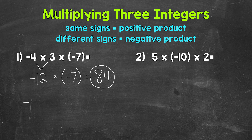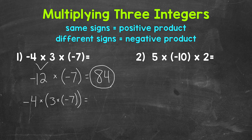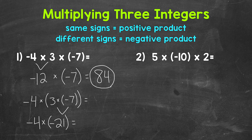Let's see exactly what that means here. I will rewrite our problem: negative four times, and then I'm going to put three times negative seven in parentheses to show that we are doing that first, not working left to right. So three times negative seven — we have a positive times a negative, different signs — that's going to give us a negative. Think of this as three times seven, which is 21, and again, it's going to be negative. Then we bring down our multiplication sign and the negative four. So we end with negative four times negative 21. Same signs — a negative times a negative — that's going to give us a positive. Let's think of this as four times 21, which is 84, and again, it's going to be positive. So we get 84 that way as well.